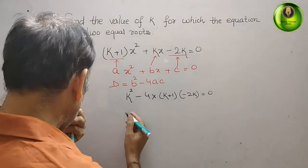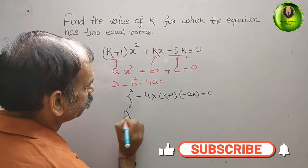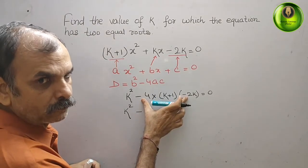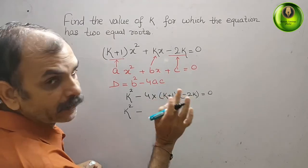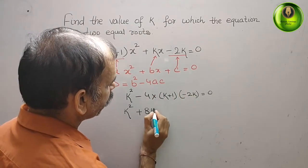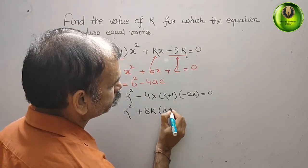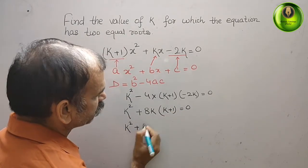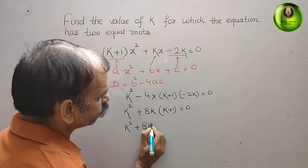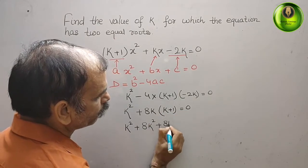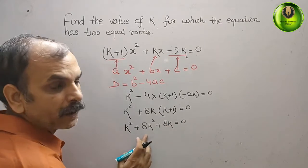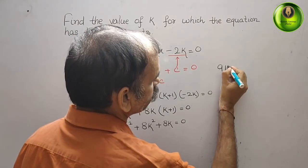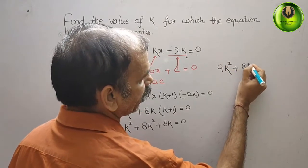Now, k² minus (into minus is plus), plus 8k(k+1) = 0. Now solve this, what you will get? k² plus 8k² plus 8k = 0. 9k² + 8k = 0.